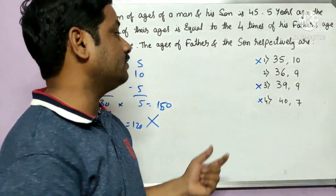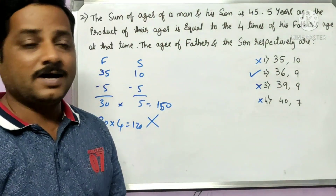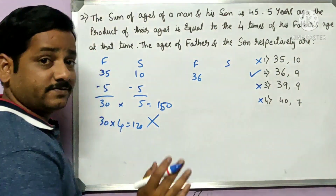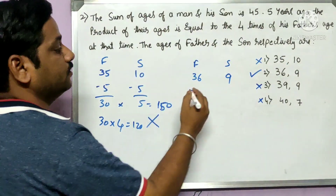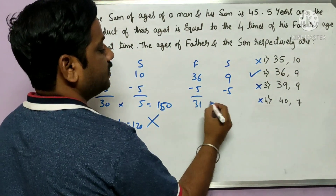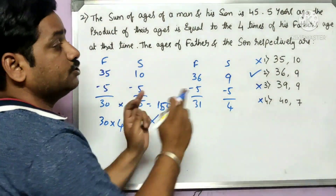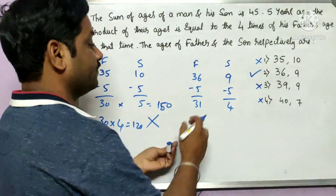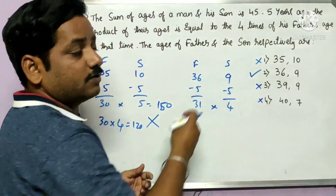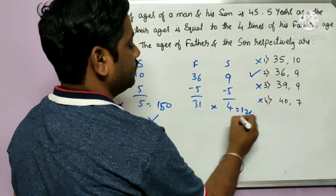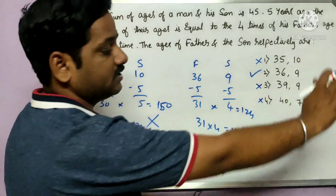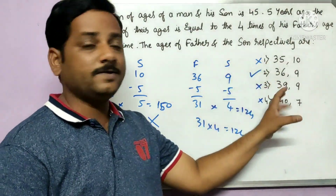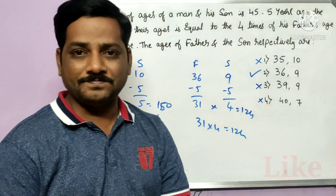Only one option remains, so that must be the right answer. To cross-check: father = 36, son = 9. Five years ago, father = 31 and son = 4. Product of their ages = 31 × 4 = 124, and four times the father's age = 4 × 31 = 124. They are equal, so the answer is father = 36 and son = 9. This is how you get answers within a fraction of seconds.